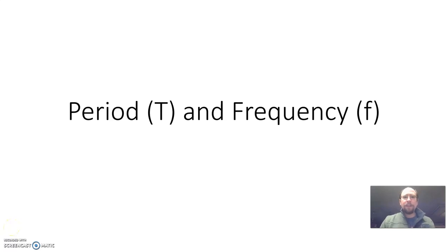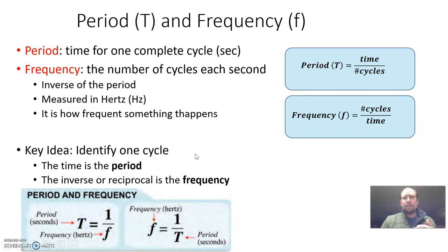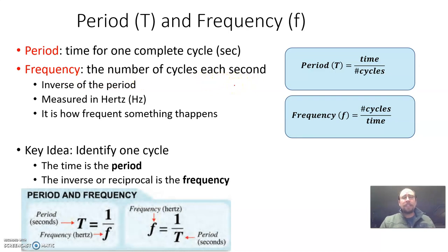Hey physics peeps, we're going to go over period and frequency. The tricky part with this unit is knowing how to find the period and frequency. We already went over what they are: period is time for one complete cycle, and frequency is the number of cycles per second. The students that do really well in this unit know what these definitions are and can start figuring things out from there.